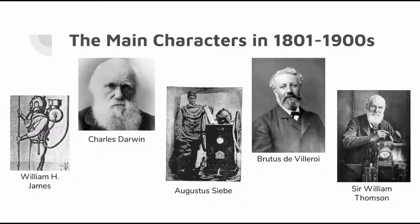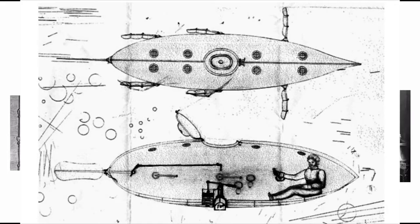Brutus de Vigeroy was contracted by the United States Navy to design a submarine. He created the first U.S. Navy submarine in 1861.